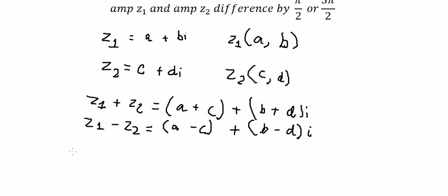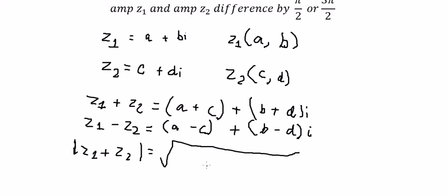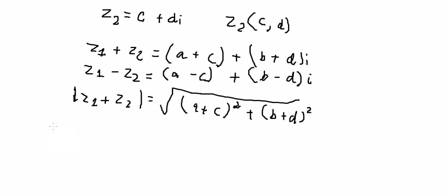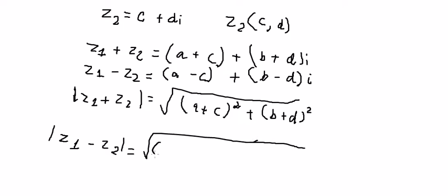We apply the absolute value. So we get the square root of (a plus c) squared plus (b plus d) squared. Similarly for z1 minus z2, we get the square root of (a minus c) squared plus (b minus d) squared.